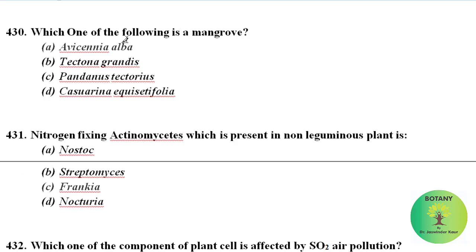Which one of the following is a mangrove? Among these, Avicennia alba is a mangrove plant.